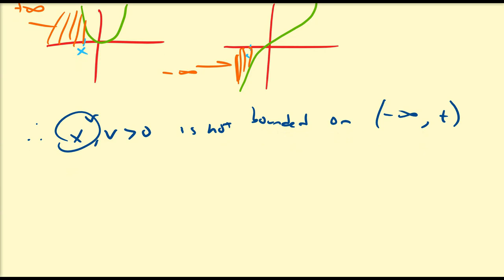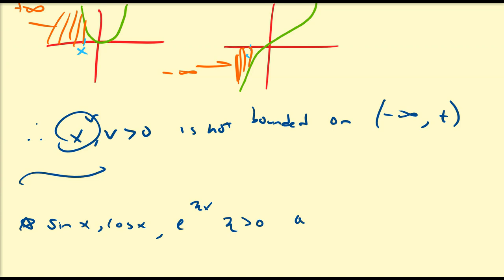What about the other three functions? Sine x, cosine x, and e to the eta x for eta greater than zero are all bounded: sine x is bounded between negative one and one for all x, and the same with cosine. And e to the x has a horizontal asymptote on the left, so it's bounded on the interval minus infinity to some finite number t.